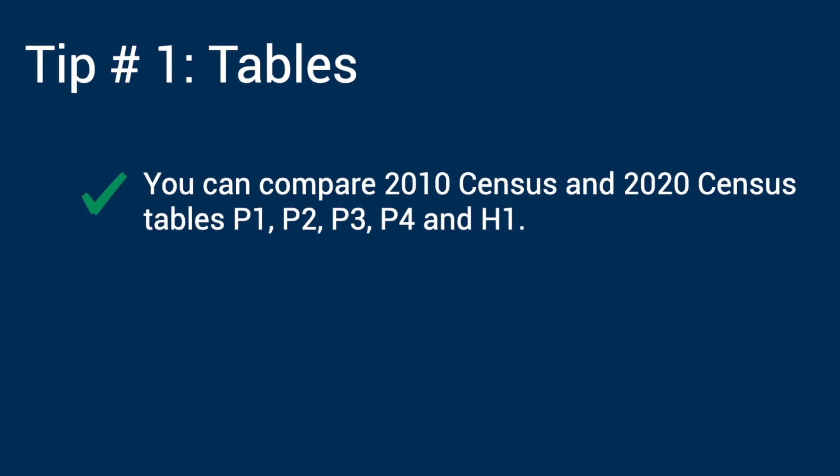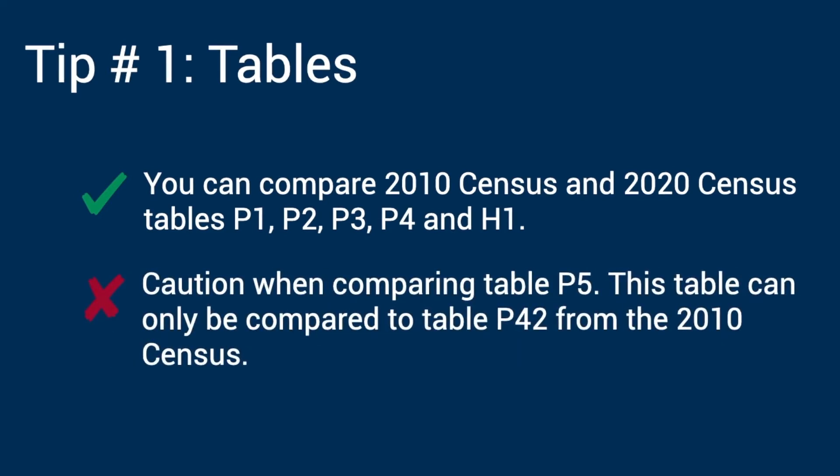Tip number one: you can compare tables P1, P2, P3, P4, and H1 from the 2010 census and the 2020 census. These tables have the same data fields and universe. However, as part of the 2020 census redistricting data products, the census will release for the first time table P5 for group quarters population. In 2010, group quarters population by group quarters type was not released as part of the redistricting products — it was released as table P42. Therefore, you can compare table P5 from 2020 with table P42 from the 2010 census.